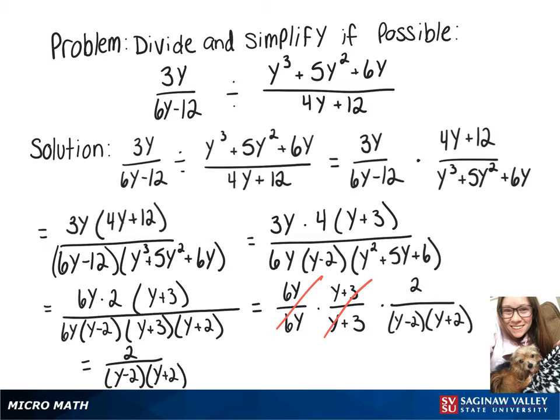So that's one way we can write the answer. Or if you want to multiply out the bottom, then we'll have 2 over y squared minus 4.